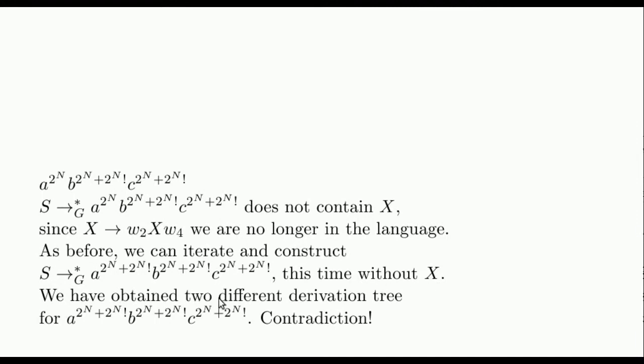Summarizing, we have obtained two different derivation trees for the same word, and this contradicts the initial assumption of the unambiguity of G.